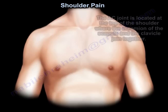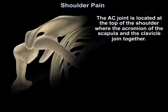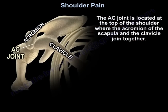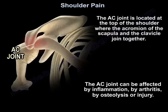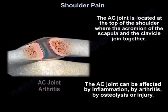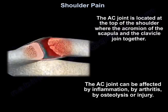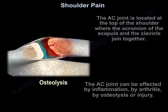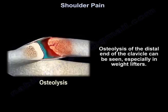The AC joint is located at the top of the shoulder, where the acromion of the scapula and the clavicle join together. This joint can be affected by inflammation, by arthritis, by osteolysis, or injury. Osteolysis of the distal end of the clavicle can be seen especially in weight lifters.